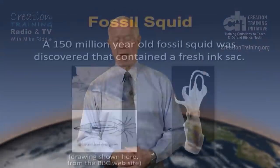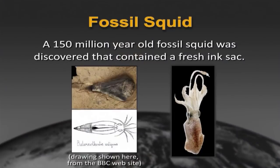Now, here's a new one. Fossil squid recently found. According to evolution, this was a 150-million-year-old fossil squid. And what did they find out about it? The squid was discovered to contain a fresh ink sack. In other words, fresh ink was still in this squid, and it's 150-million-years-old. Folks, something is wrong with the evolutionist timescale.